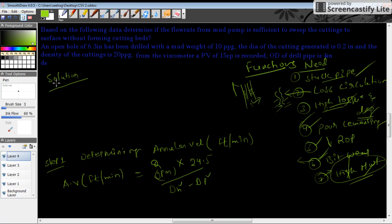So coming to the problem. Based on the following data, determine if the flow rate from the mud pump is sufficient to sweep the cuttings to the surface without forming cutting beds. An open hole of 6.3 inch has been drilled with a mud weight of 10 ppg. The diameter of the cutting generated is 0.2 inch and the density of the cuttings is 20 ppg.